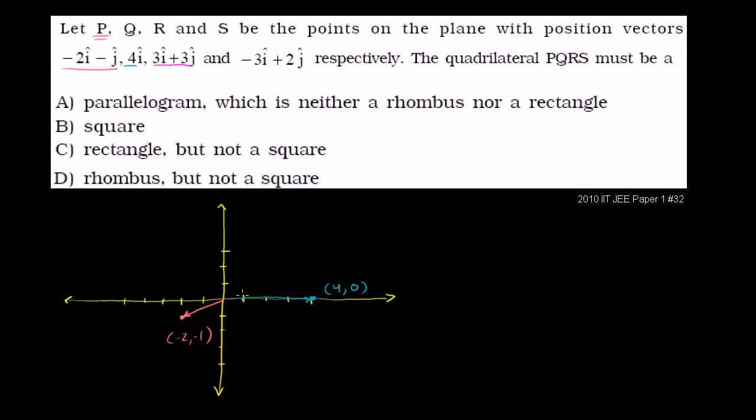Then we have 3i plus 3j. So 1, 2, 3, 1, 2, 3. That is that point right there. The position vector specifies that point, or it specifies the point 3 comma 3.